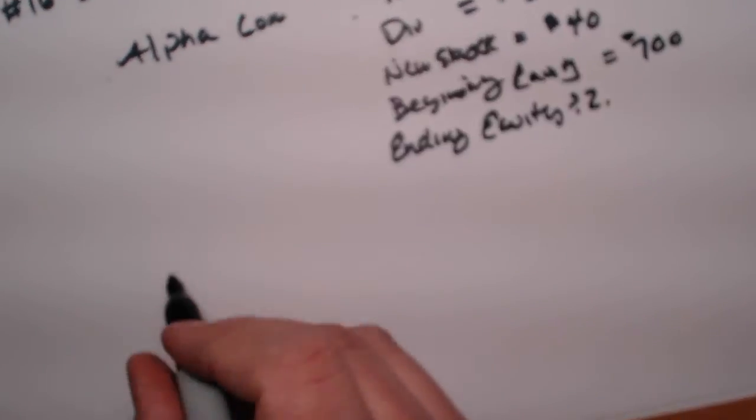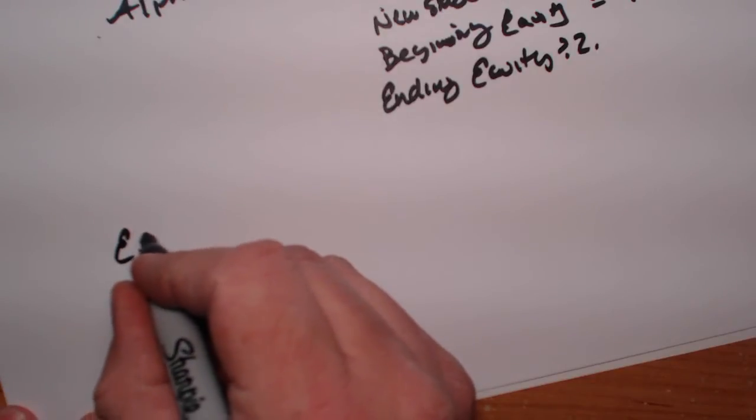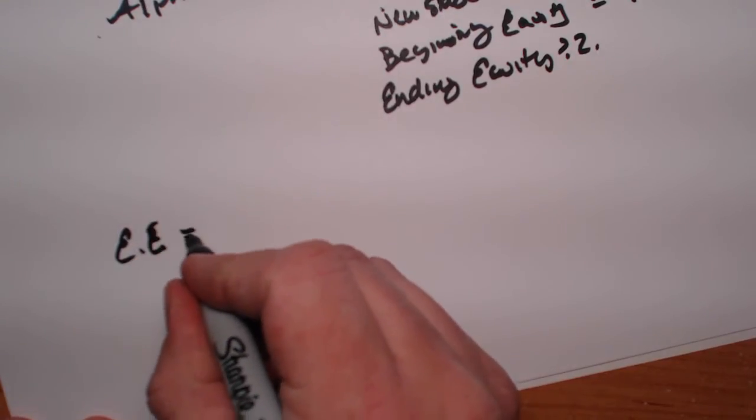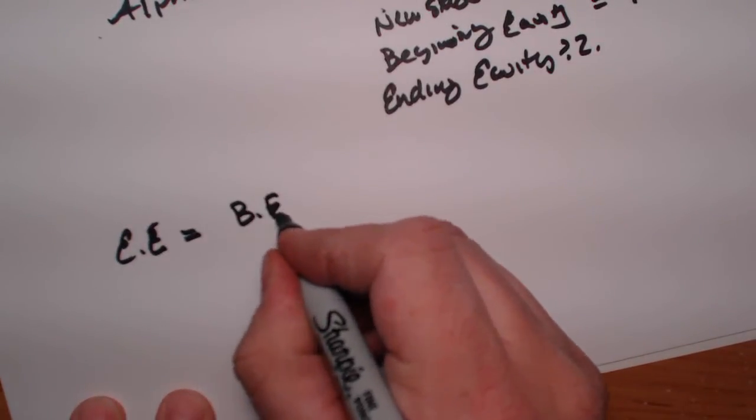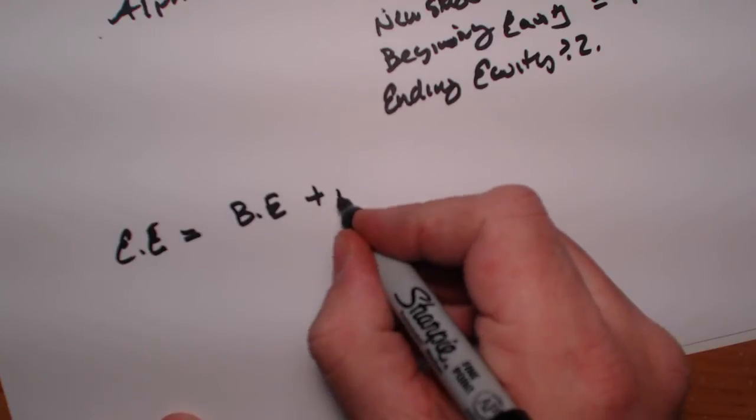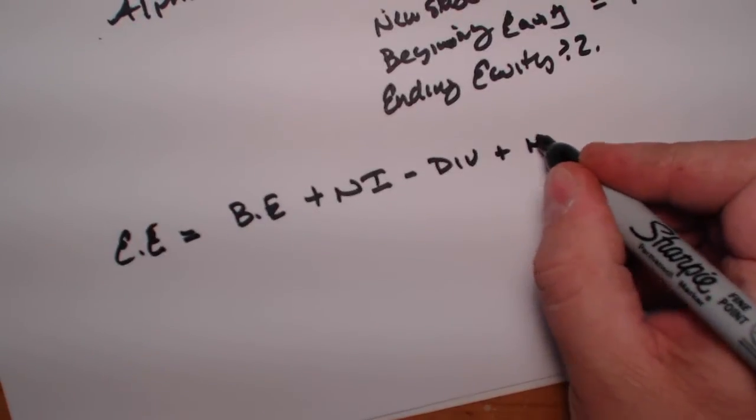Well, how we do it is a very simple equation. Ending equity, or EE, is equal to beginning equity (BE) plus net income (NI) minus the dividends plus new stock.